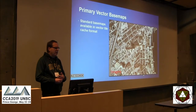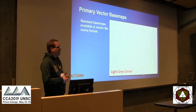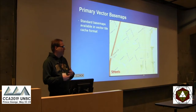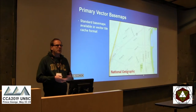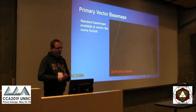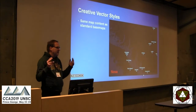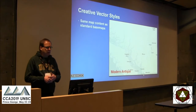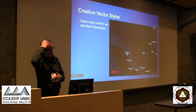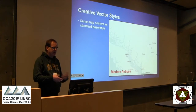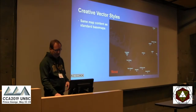Right now in ArcGIS Online we've got our standard base maps — what we call our primary base maps — where the vector base maps are similar to the raster base maps in style and look, and these are also available in vector. Then we've got what we like to call creative styles, which are a bit different from our standard base map looks — more of an artistic approach to our usual collection of base maps.